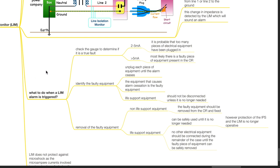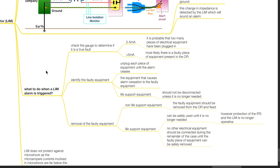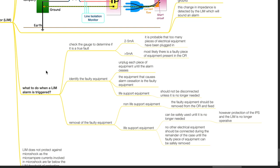What to do when a LIM alarm is triggered? Check the gauge to determine if it is a true fault. If it is 2 to 5 milliamps, it is probable that too many pieces of electrical equipment have been plugged in. If it is more than 5 milliamps, most likely there is a faulty piece of equipment present in the OR. Identify the faulty equipment by unplugging each piece until the alarm ceases. The equipment that causes alarm cessation is the faulty equipment and should be repaired. For life support equipment, these should not be disconnected unless no longer needed. Remove the faulty equipment. For non-life support equipment, remove and fix it. For life support equipment, it can be safely used until no longer needed; however, protection of the IPS and LIM is no longer operational. No other electrical equipment should be connected during the remainder of the case until the faulty equipment can be safely removed.